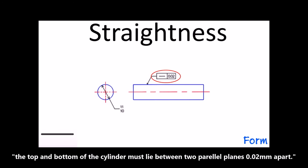The top and bottom of the cylinder must lie between two parallel planes, 0.02 mm apart.